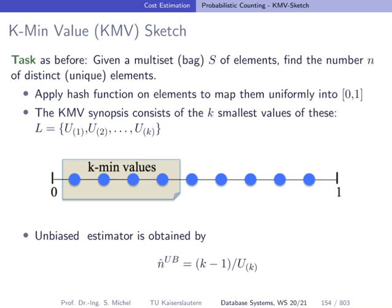The KMV sketch, K-minimum value sketch, is another estimator like the Flajolet-Martin sketch to estimate the number of distinct elements of a multiset. So we have a multiset and we want to know n, which is the number of distinct elements.